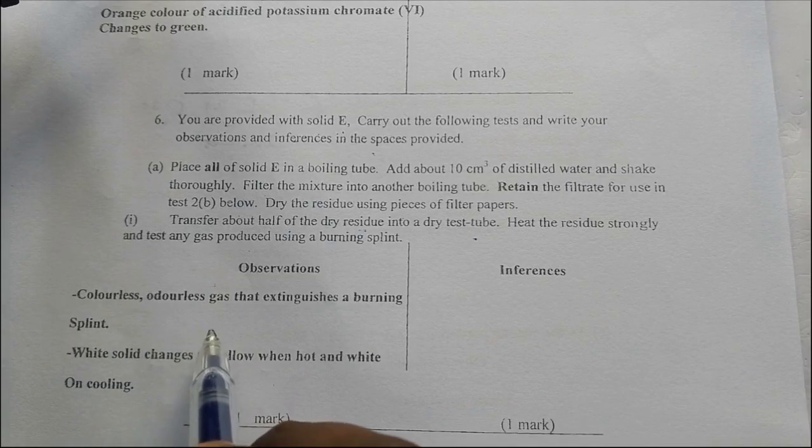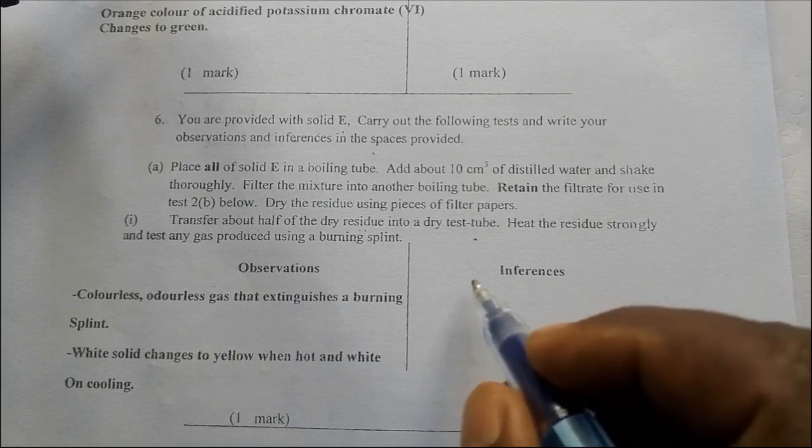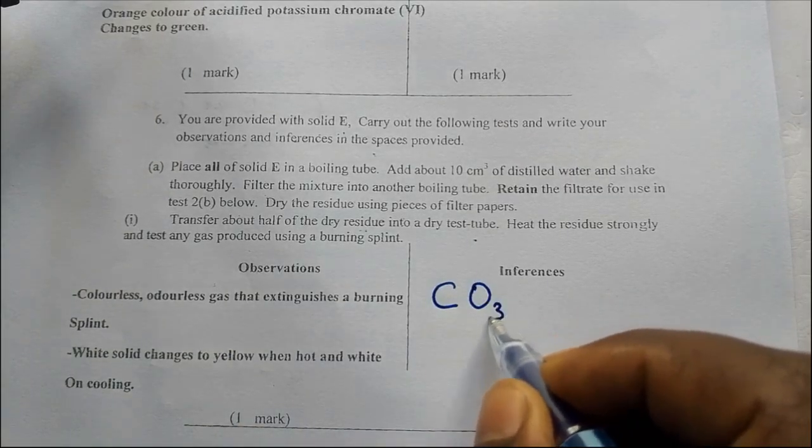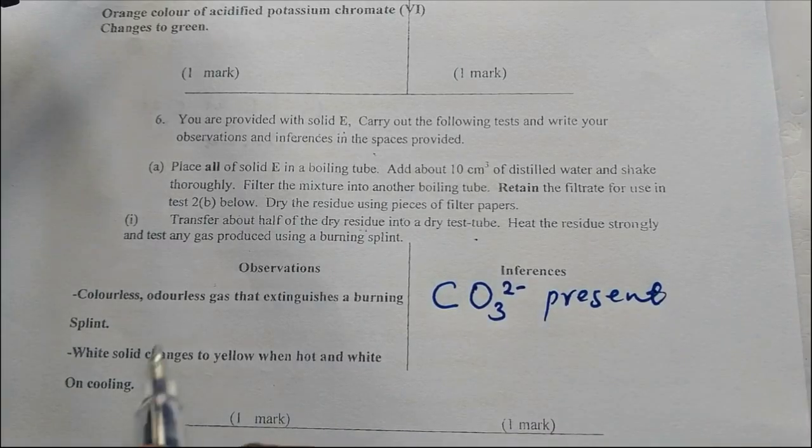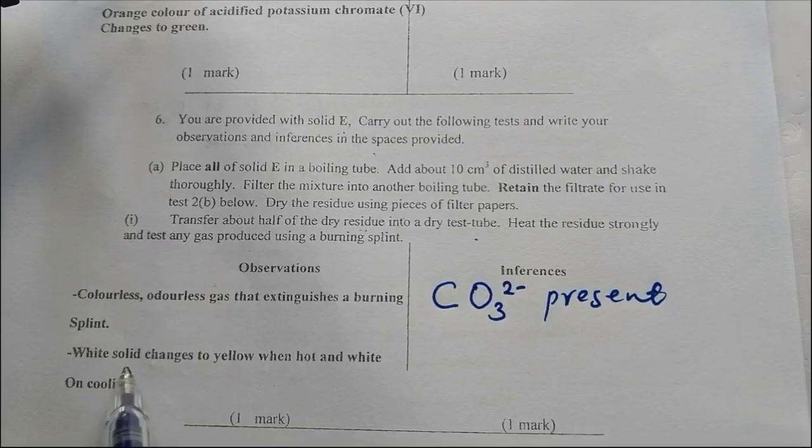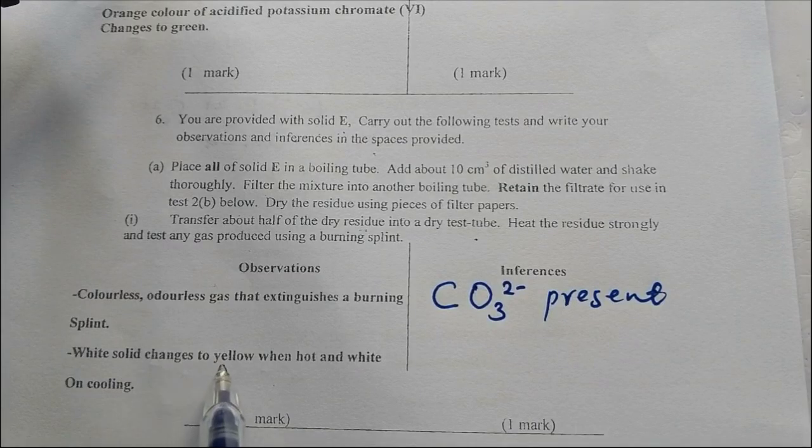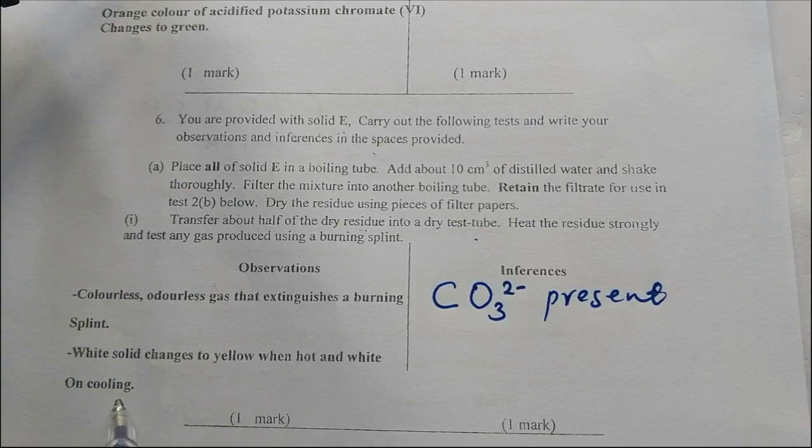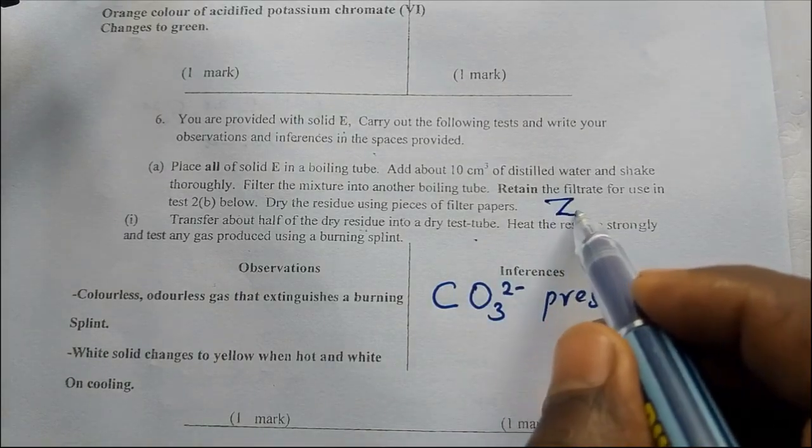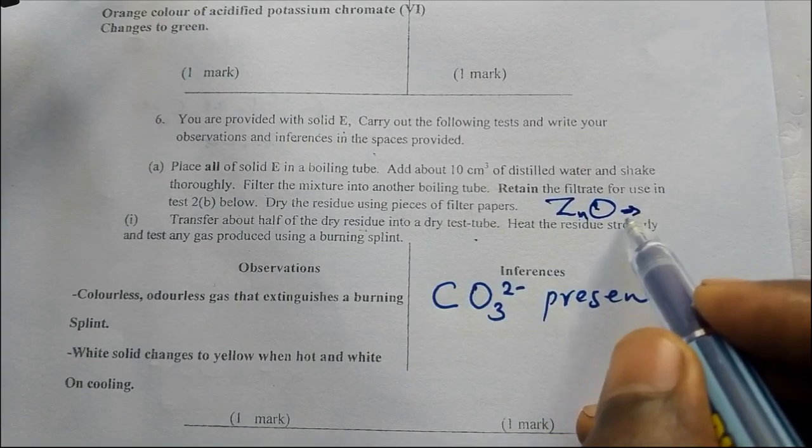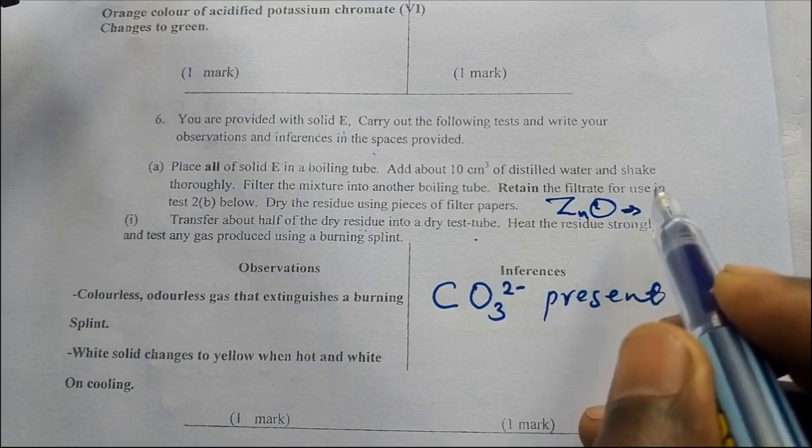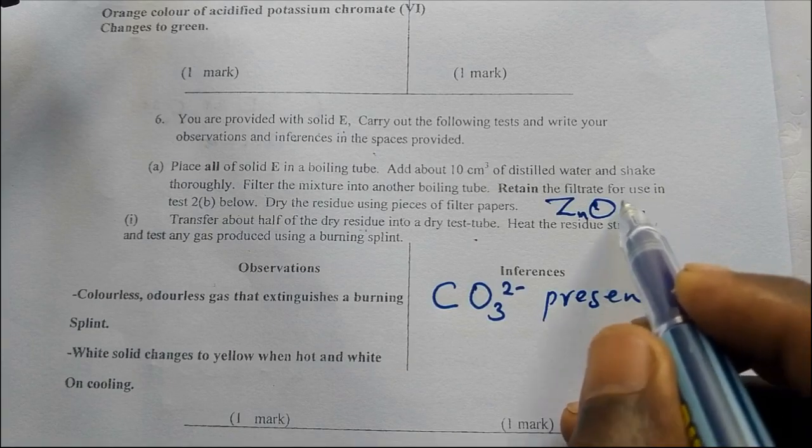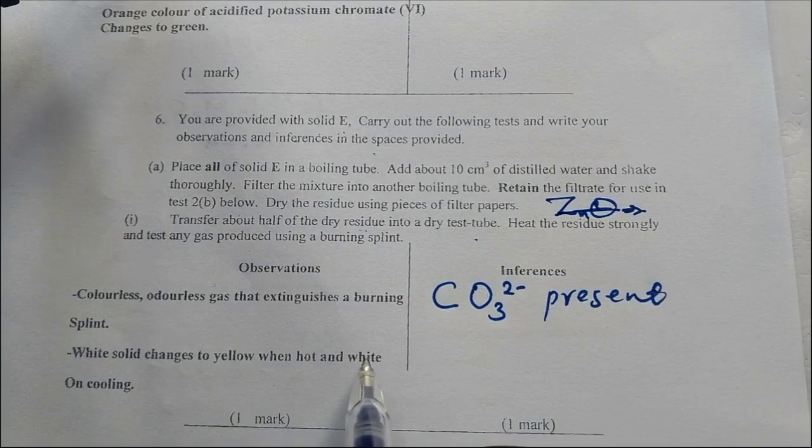We know that is carbon dioxide. If it is carbon dioxide then what is present is CO₃²⁻. A white solid changes to yellow when hot and white when cooling. The only solid that behaves like this is zinc oxide. Before you burn it when it is cold it is white. Once you burn it it changes to yellow. After cooling it changes back to white. So this is zinc carbonate.